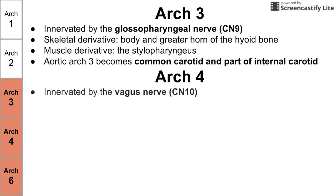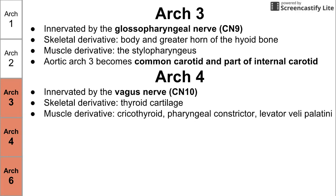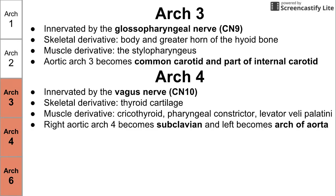Arch four is innervated by the vagus nerve, cranial nerve ten. The skeletal derivative is the thyroid cartilage. Muscle derivatives are the cricothyroid, the pharyngeal constrictor, and the levator veli palatini. The major artery from arch four becomes two different vessels depending on the side: the right aortic arch from arch four becomes the subclavian artery, whereas the left aortic arch from arch four becomes the arch of the aorta — the big curving arch on the left side of the body coming directly out of the heart.